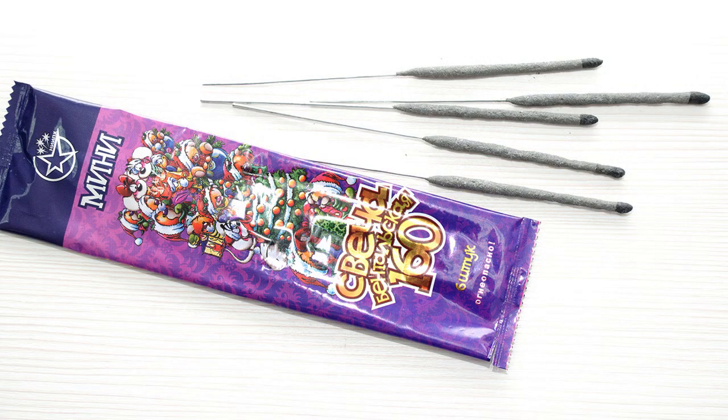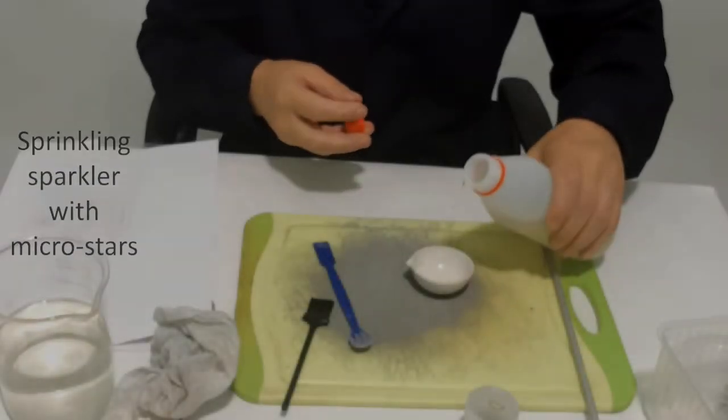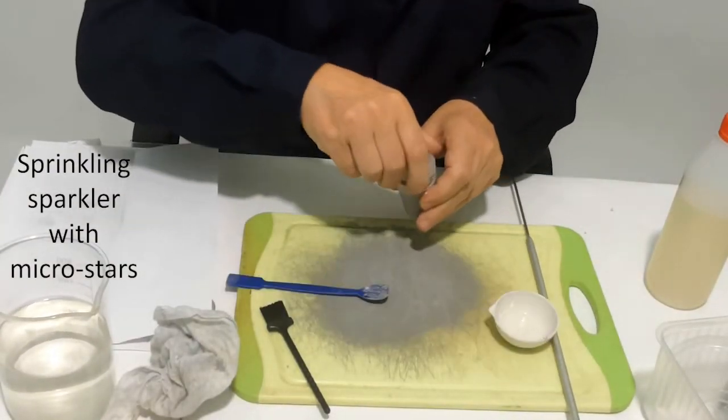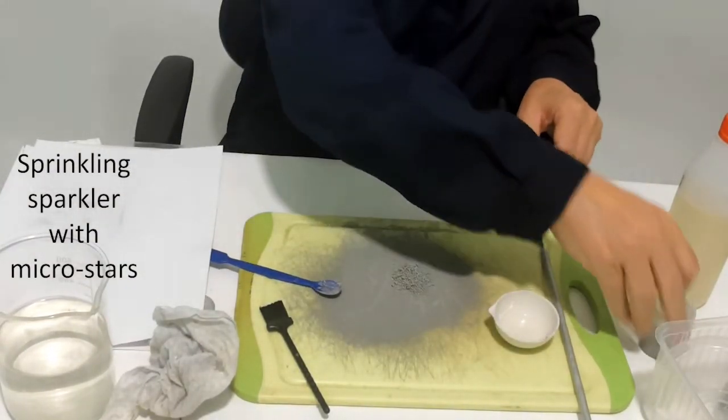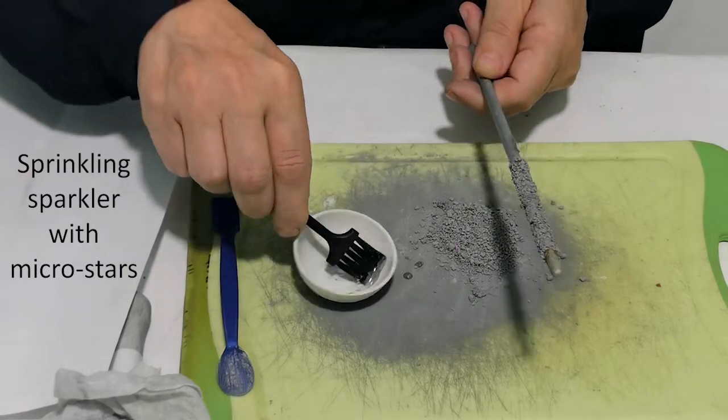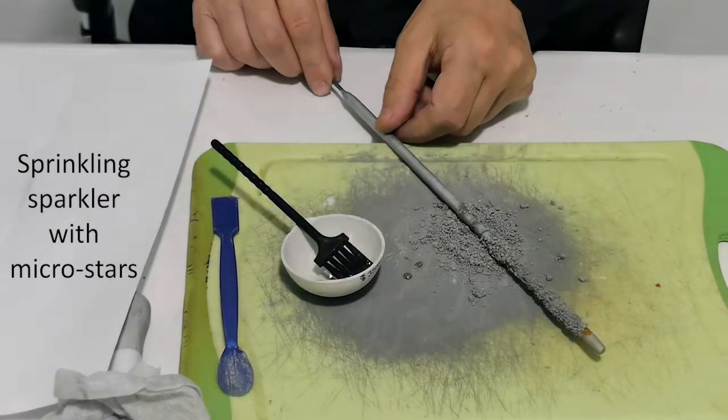If you are too lazy to mess around you can buy a ready-made sparkler. Then we amplify the sparkler with crackling micro stars. We take the usual sparkler, smear it with combustible glue, and sprinkle with micro stars.